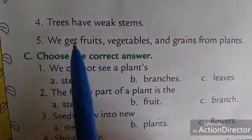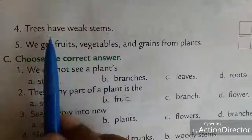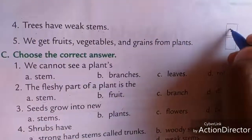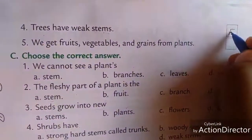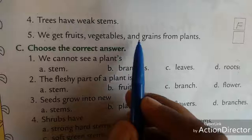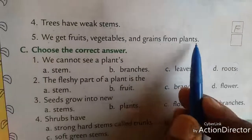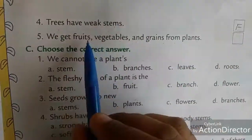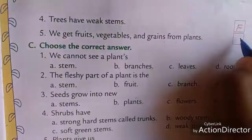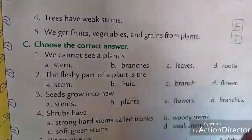Next: trees have weak stems. No, trees have strong stems. So this is false. Write here: F. We get fruits, vegetables and grains from plants. Yes, we do get fruits, vegetables and grains from plants. So this is true. Write here: T.